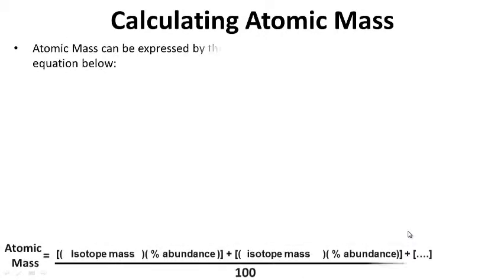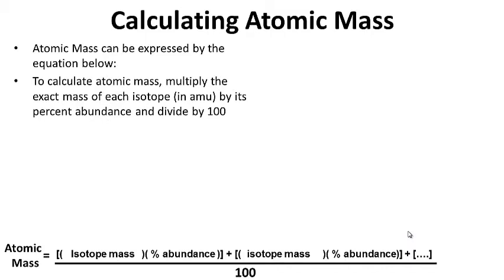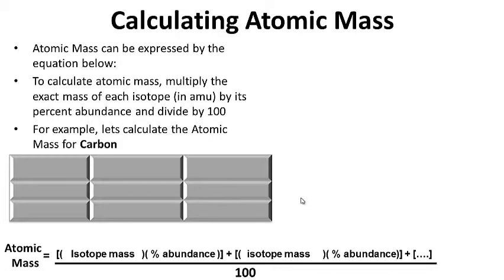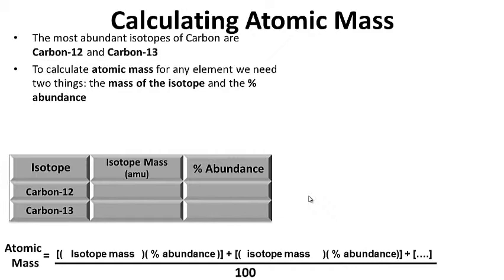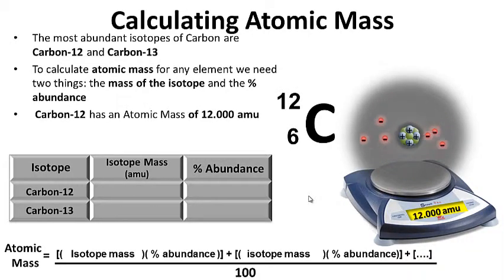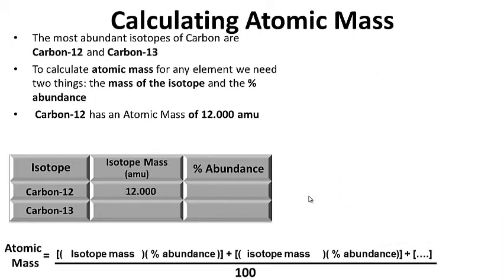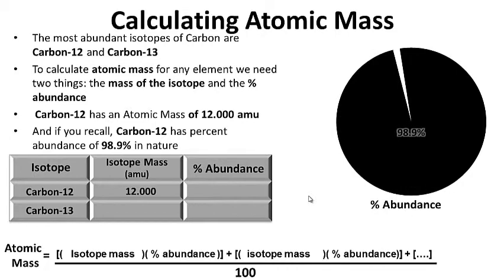Calculating atomic mass. Atomic mass can be expressed by the equation below. To calculate atomic mass, multiply the exact mass of each isotope by its percent abundance, then divide by 100. For example, let's calculate the atomic mass for carbon. The most abundant isotopes of carbon are carbon-12 and carbon-13 — we won't worry about carbon-14 because it's so rare. Carbon-12 has an atomic mass of 12 AMU, with 6 protons and 6 neutrons, and a percent abundance of 98.9% — the most common isotope of carbon.